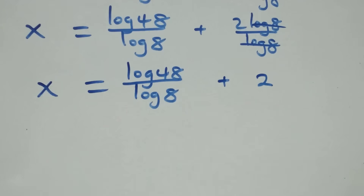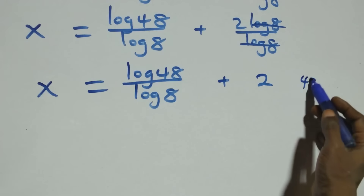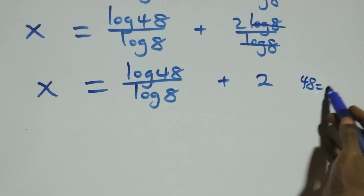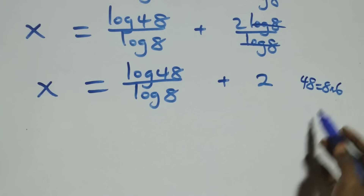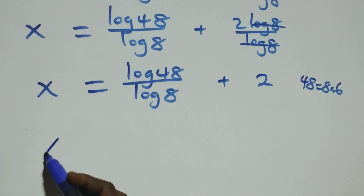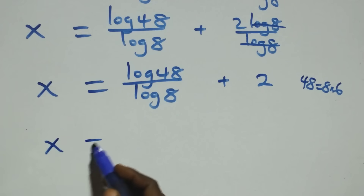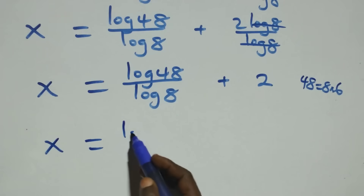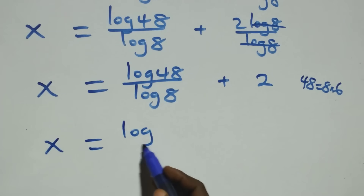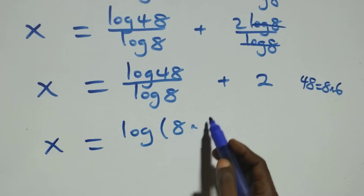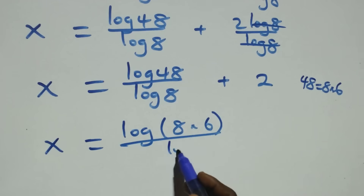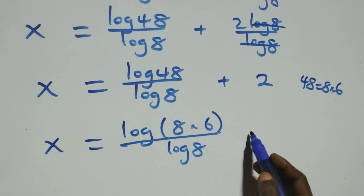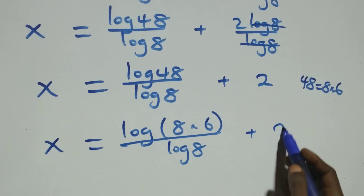Then also here, 48 can be written as 8 times 6. So what we have here becomes x equals log of 8 times 6 over log 8 plus 2.